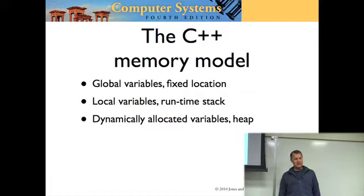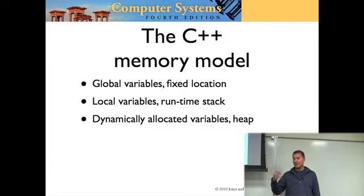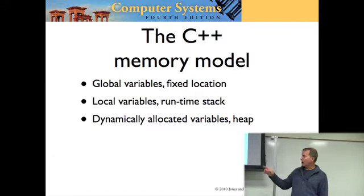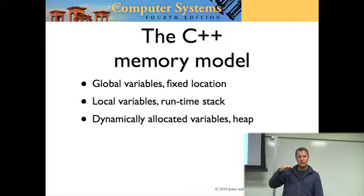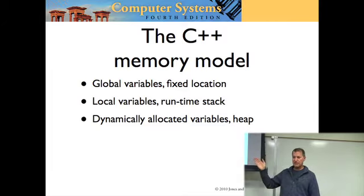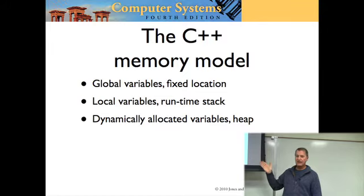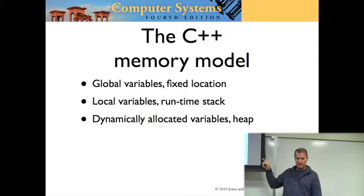Here are the three parts of the C++ memory model. First: global variables are stored in a fixed location in memory. How do you tell what's a global variable? It's not inside a function — that makes it global. Second: local variables, declared inside the function, are stored on the runtime stack. Third: dynamically allocated variables are allocated with the new operator on the heap.